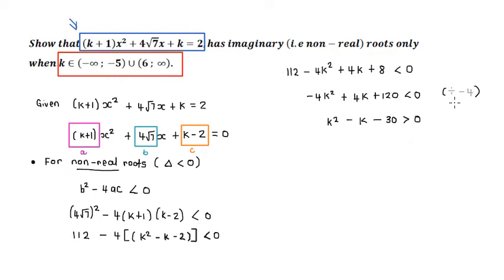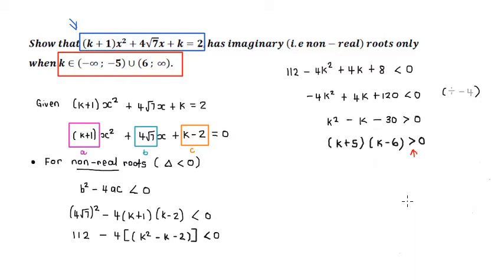Factorizing K squared minus K minus 30, we get the two factors K plus 5 and K minus 6, and we want to set this greater than zero. Notice that we have an inequality sign, so instead of two discrete values of K, we need a range of answers for K, which comes from interpreting this inequality — specifically, where it is positive, i.e., greater than zero.